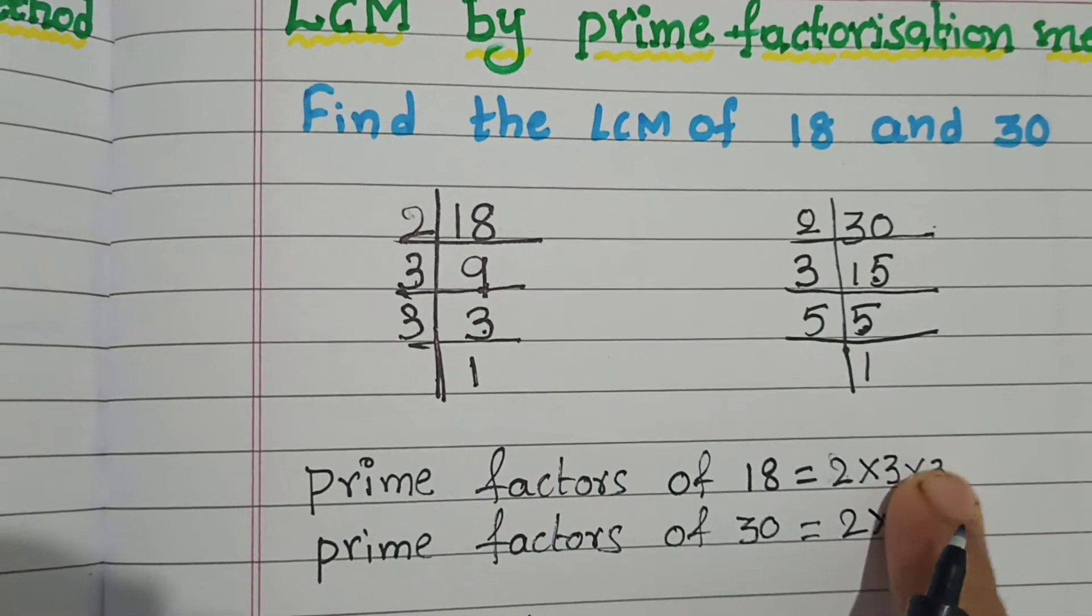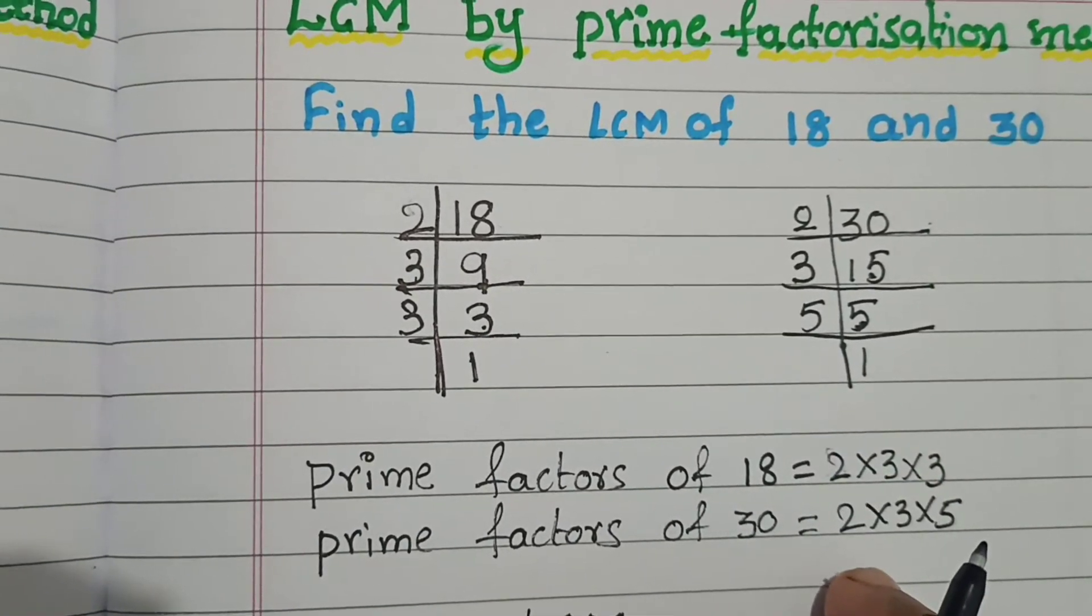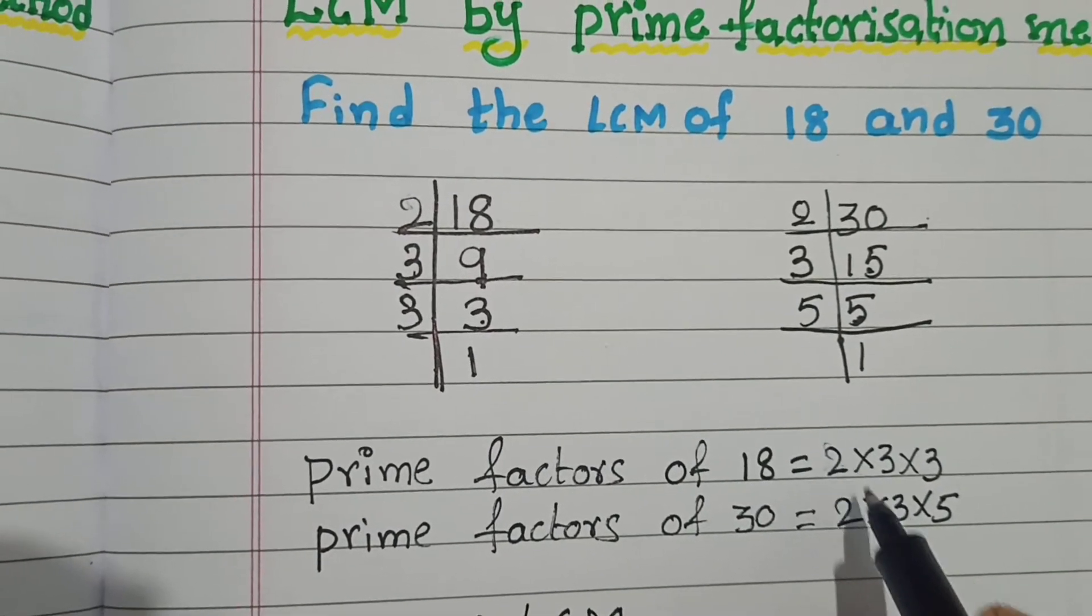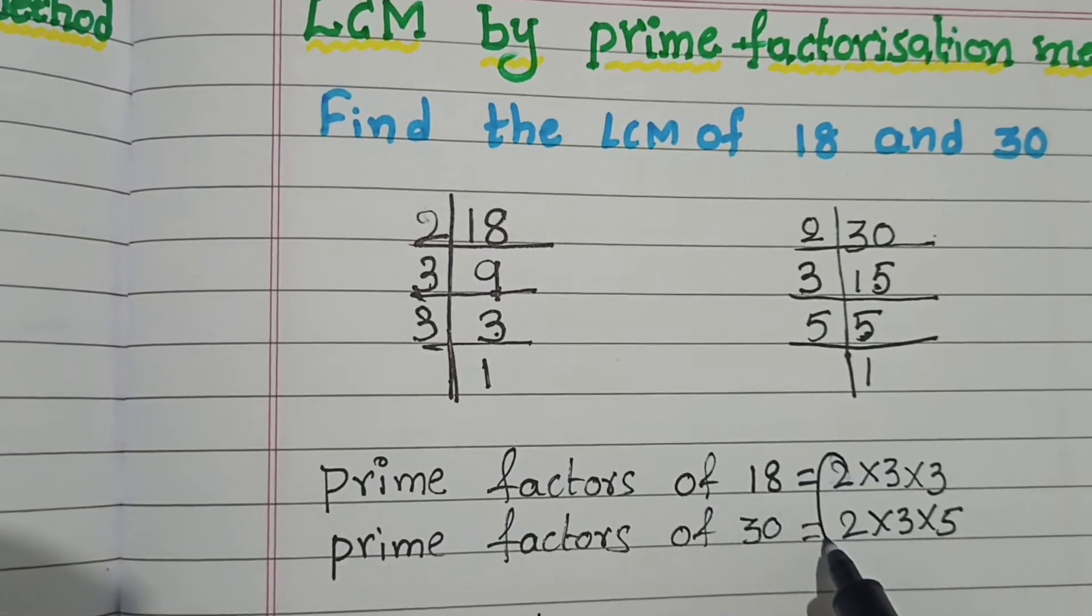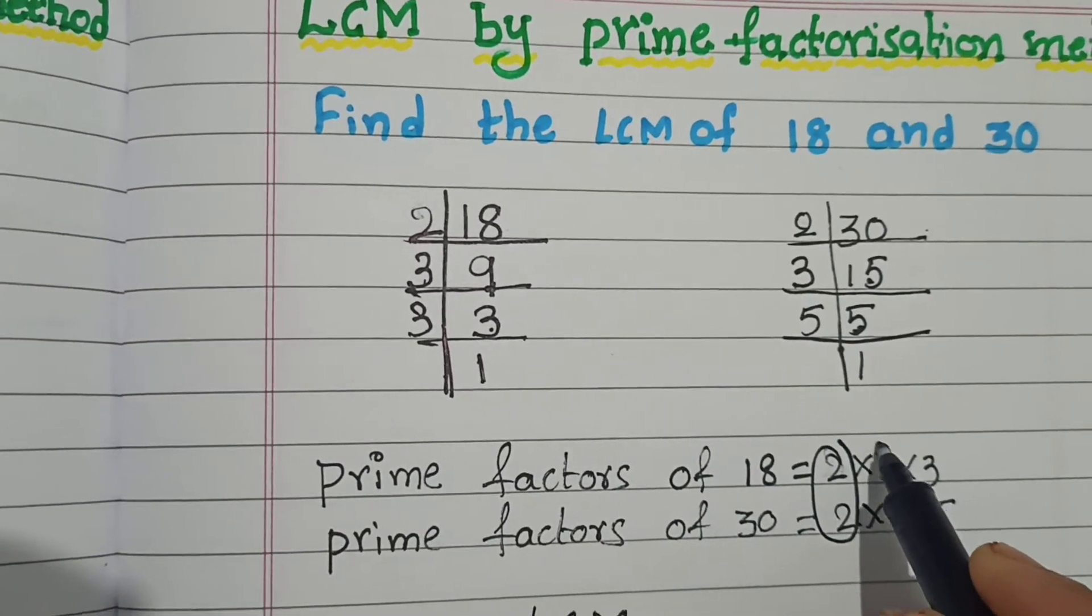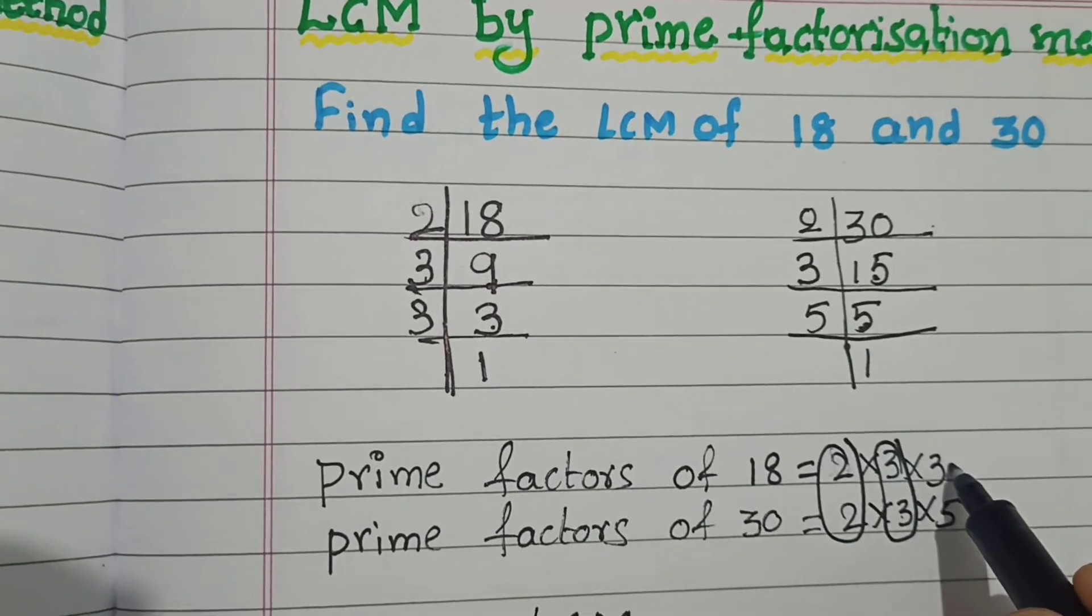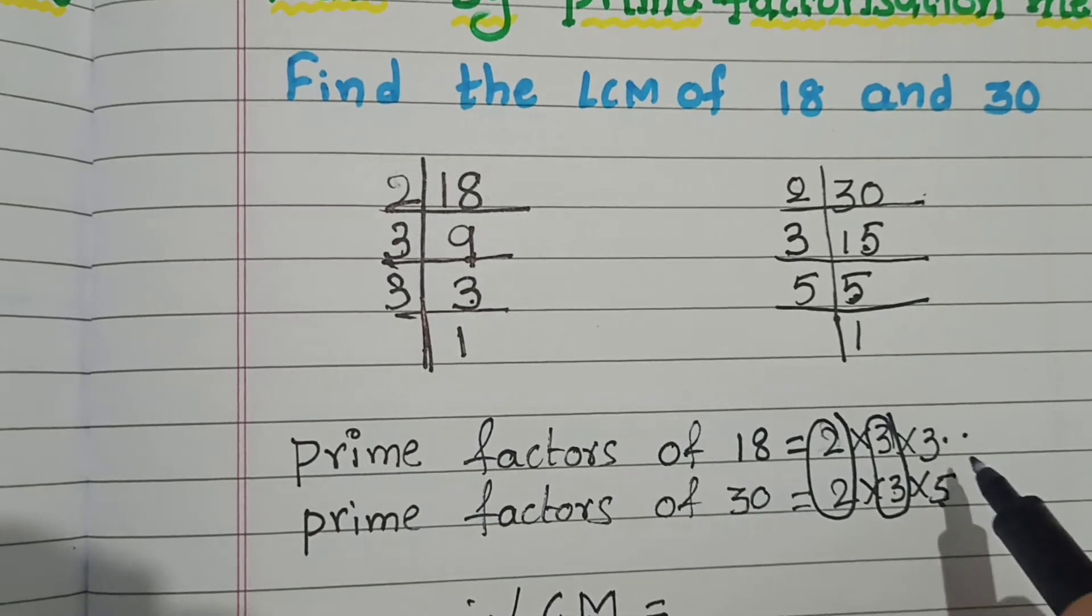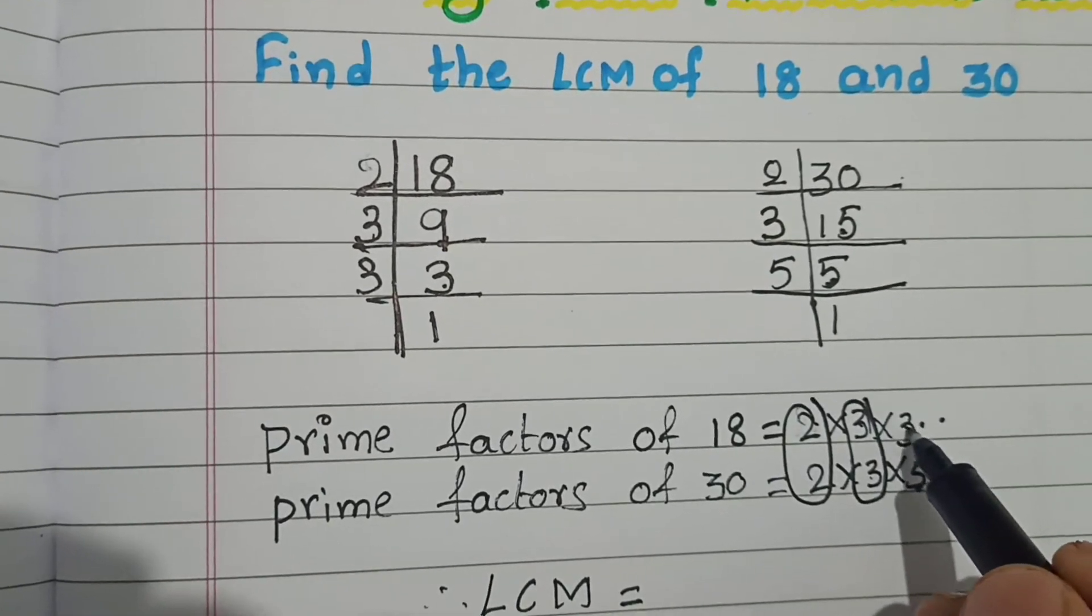These are the prime factors. Then after identify the common factors in both the numbers. What are the common? Yes, 2 is common in 18 and in 30 also. 2 is common factor. Then after, next common factor, 3 is common in both the numbers. Next, 3 is in 18 but in 30 it is not there. 5 is in 30 but it is not there in 18. So these are the extra factors. The common factors are 2 and 3. Extra factors are 3 and 5.